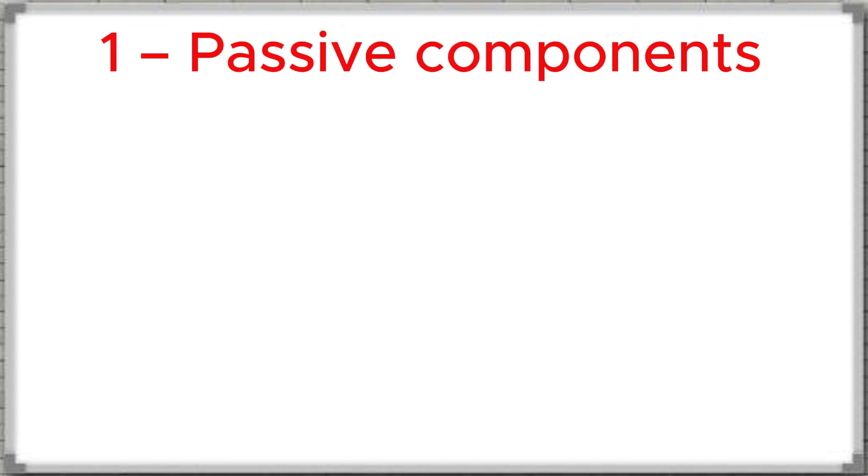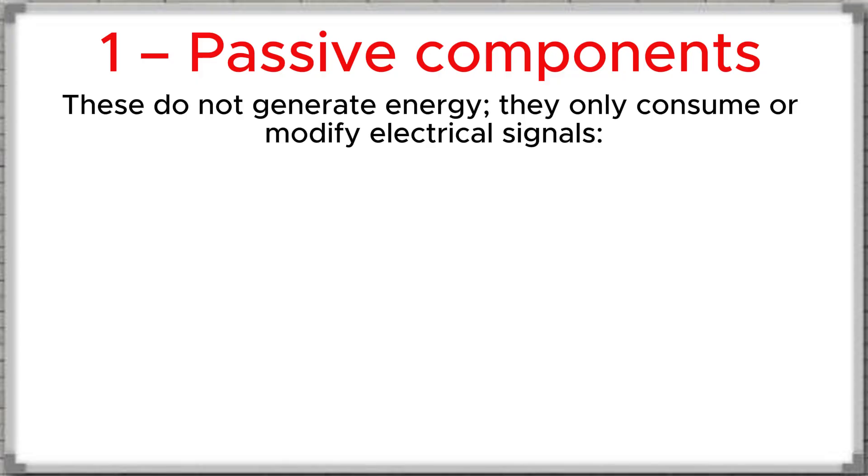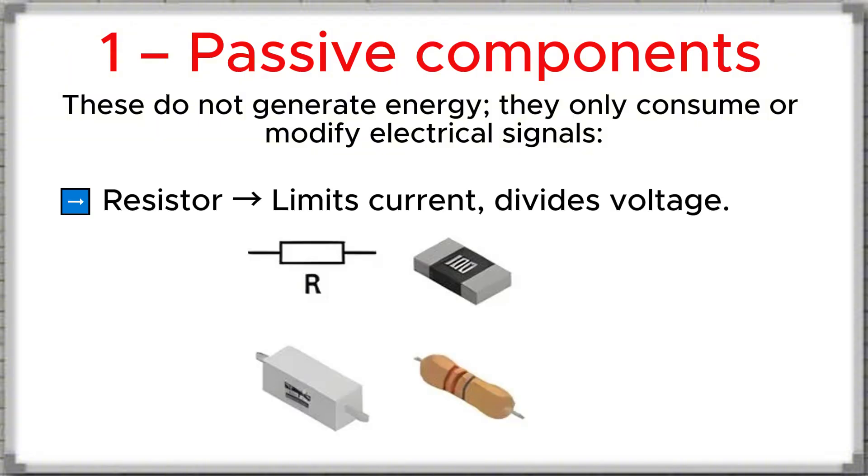Group one, passive components. These are components that do not generate energy. They only consume or modify electrical signals. For example, resistor used to limit current or divide voltage.